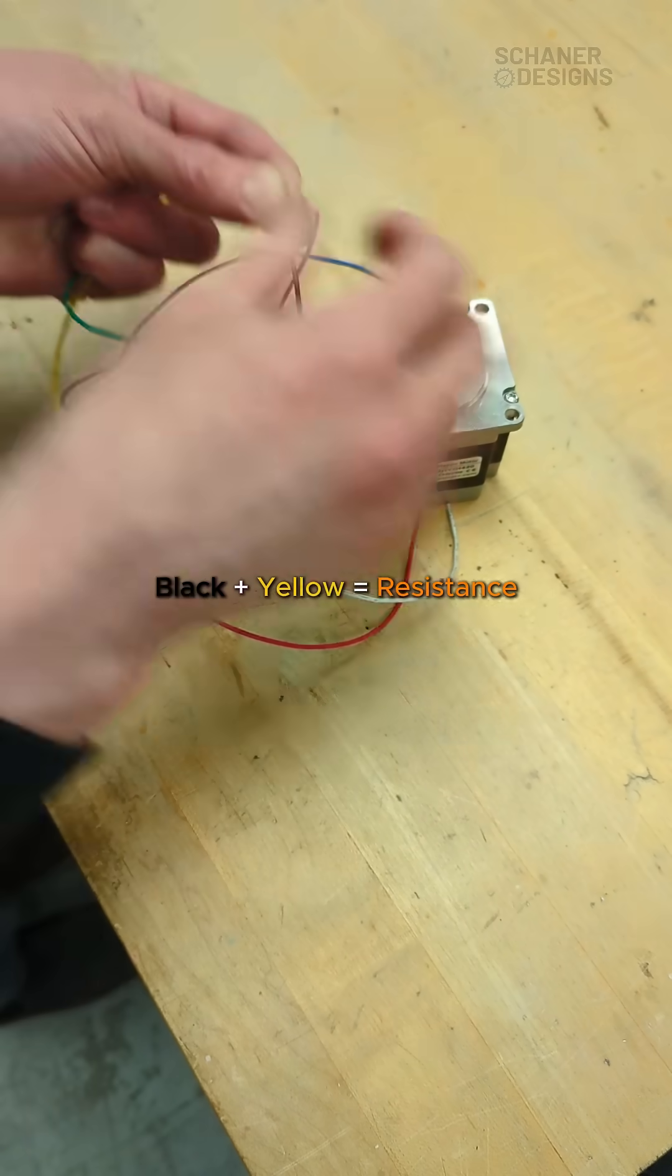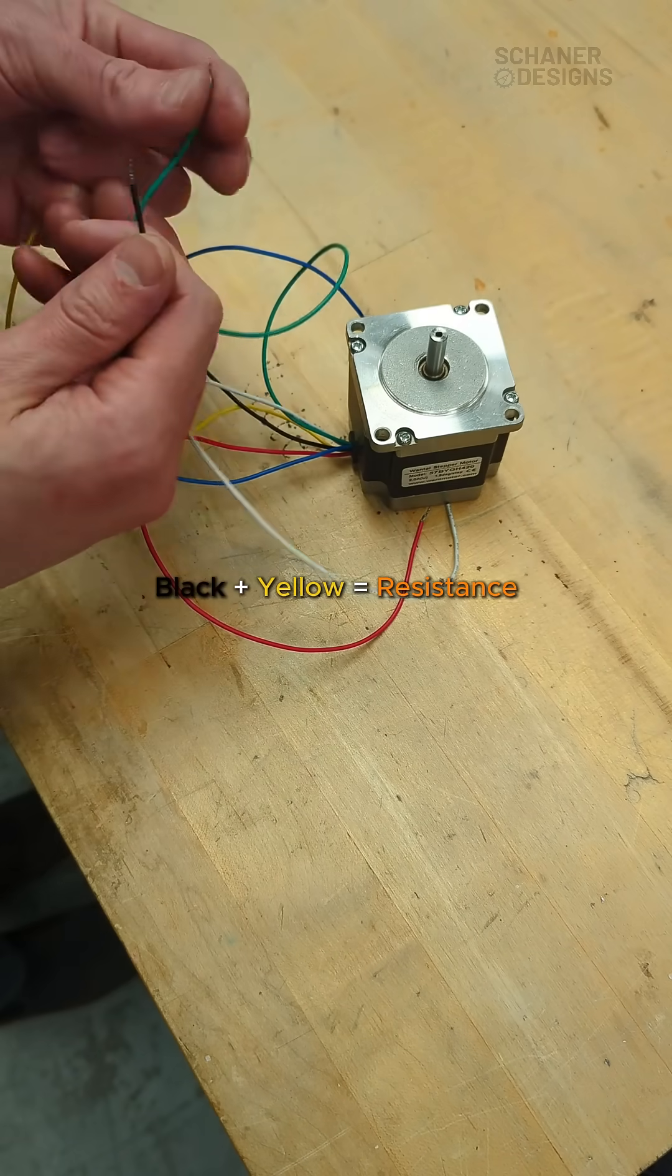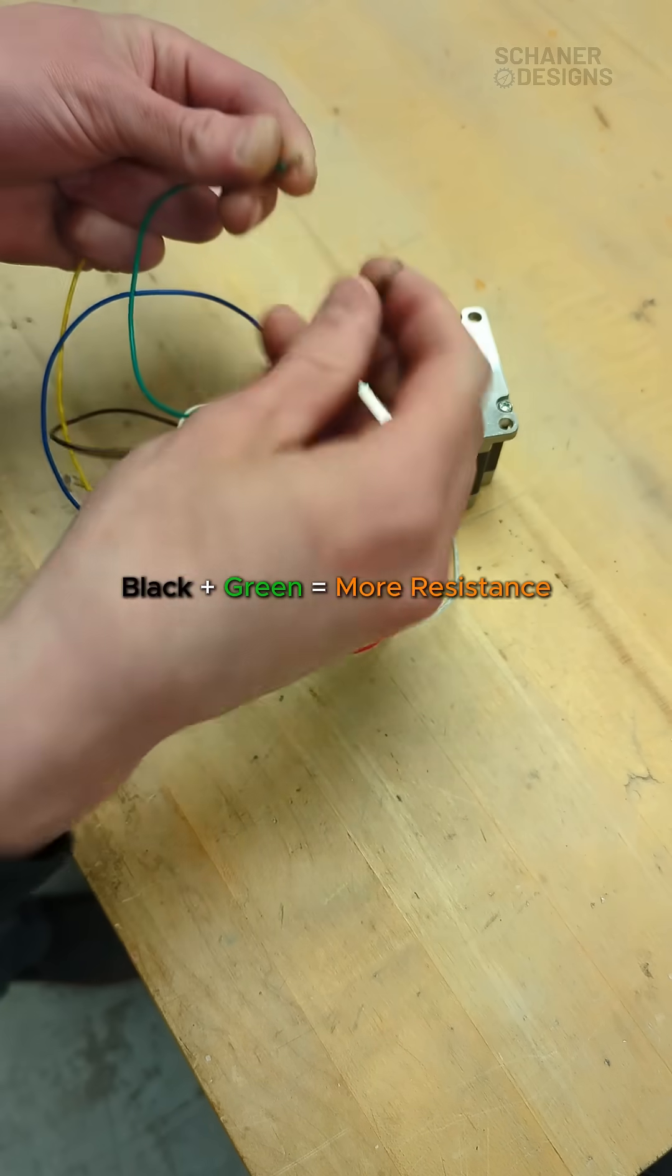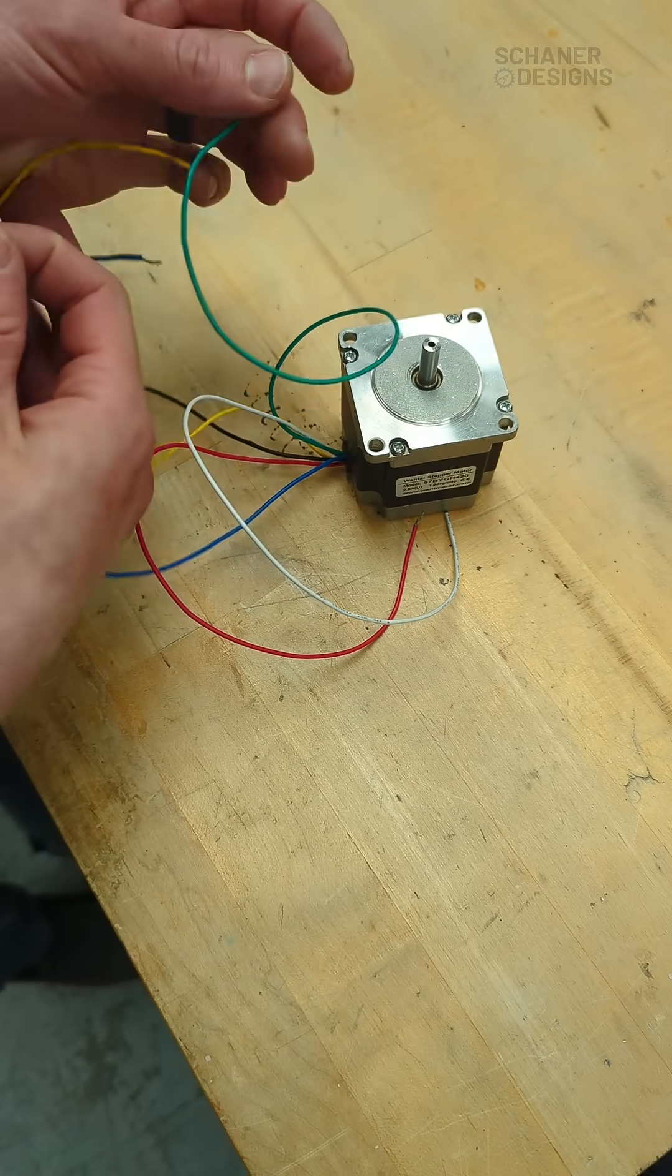So I'm going to try black and yellow—that's also hard to turn—and we would assume that black and green would also be hard. It actually feels like there's even more resistance than if I do the black and yellow, for example.